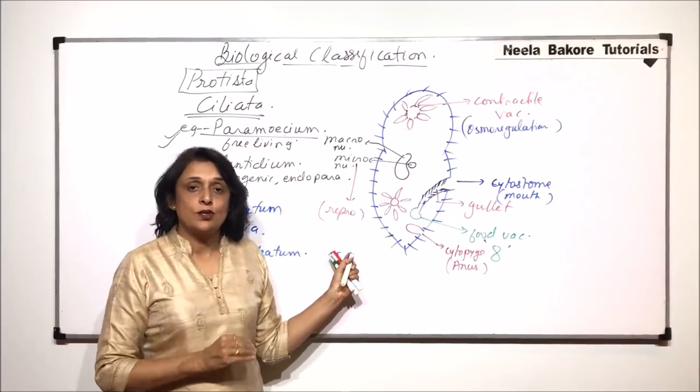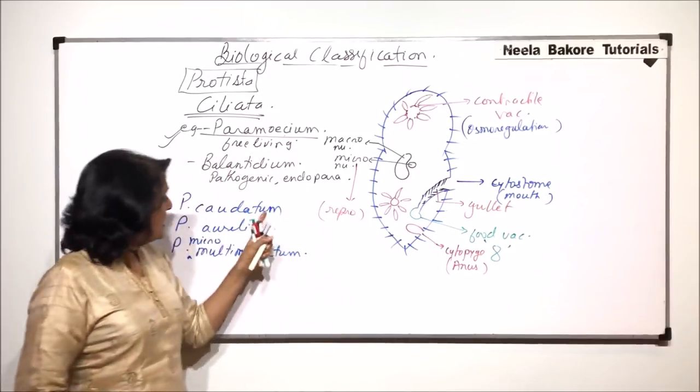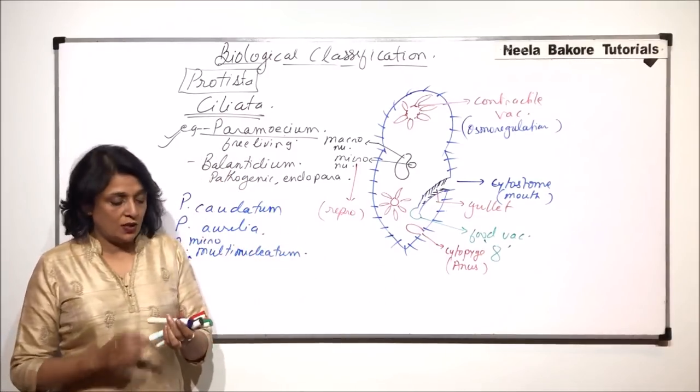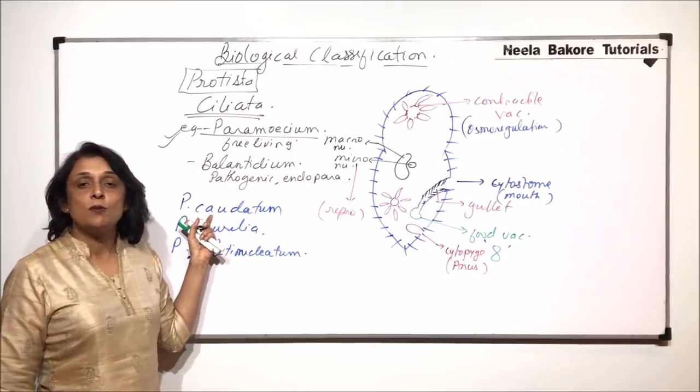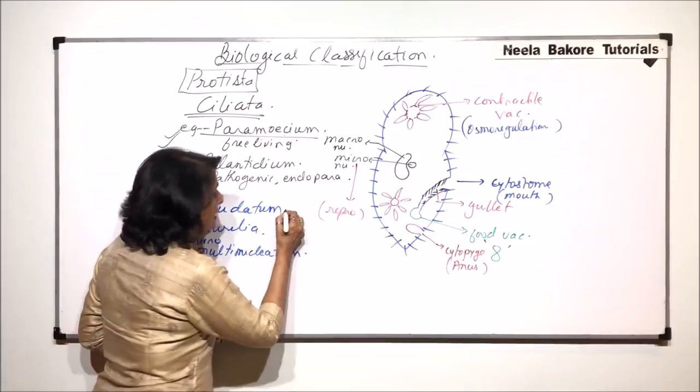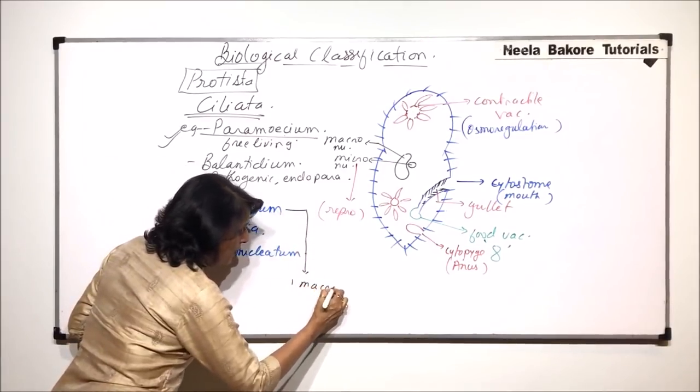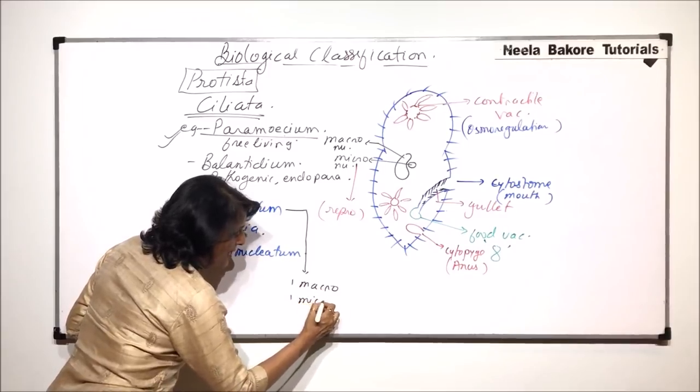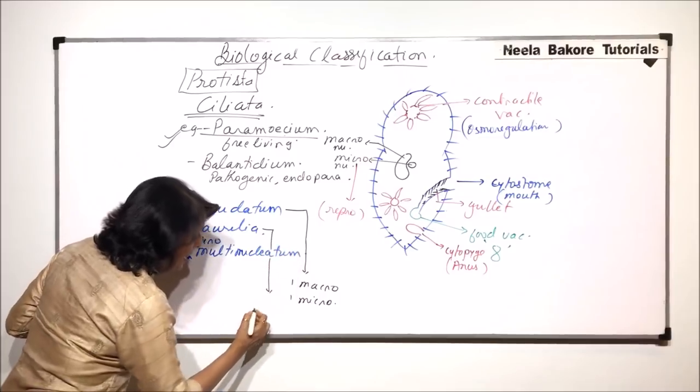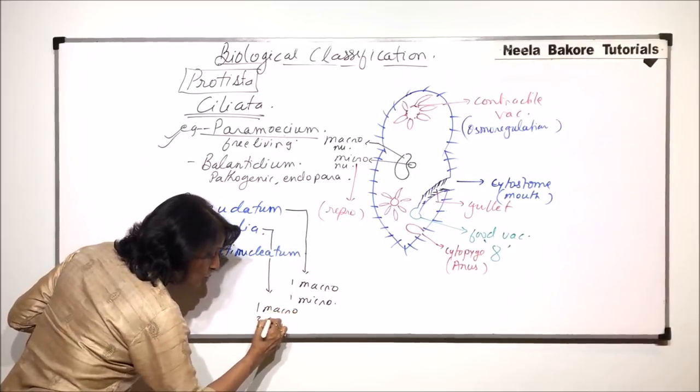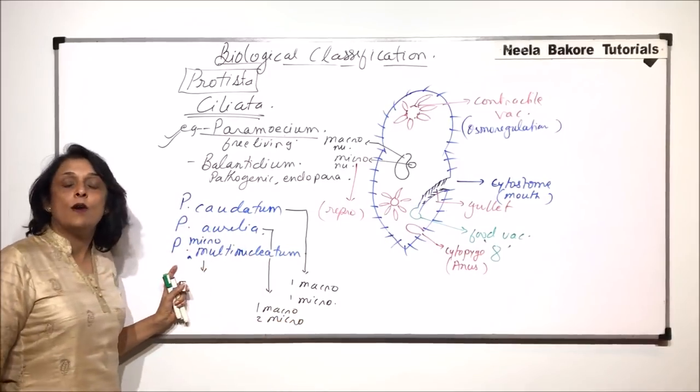Now this is how this structure or the paramecium cell looks. What is the difference between these three species of paramecium which we have written here? In case of paramecium caudatum, there is one macro and one micronucleus. In case of aurelia, there is one macro and two micronuclei.